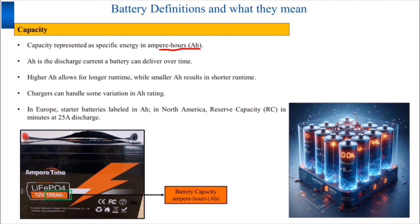A battery with a higher Ah rating means it can provide a higher discharge current over a longer period, resulting in an extended run time. Equally, a battery with a lower Ah rating would have a shorter run time.